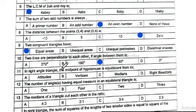Question 11: in a right-angle triangle, the midpoint of the hypotenuse is equidistant from its vertices. Option B is correct. Question 12: the number of angles having equal measure in an equilateral triangle is three. Option D is correct. Question 13: the median of a triangle cuts each other in the ratio 2:1. Option B is correct.